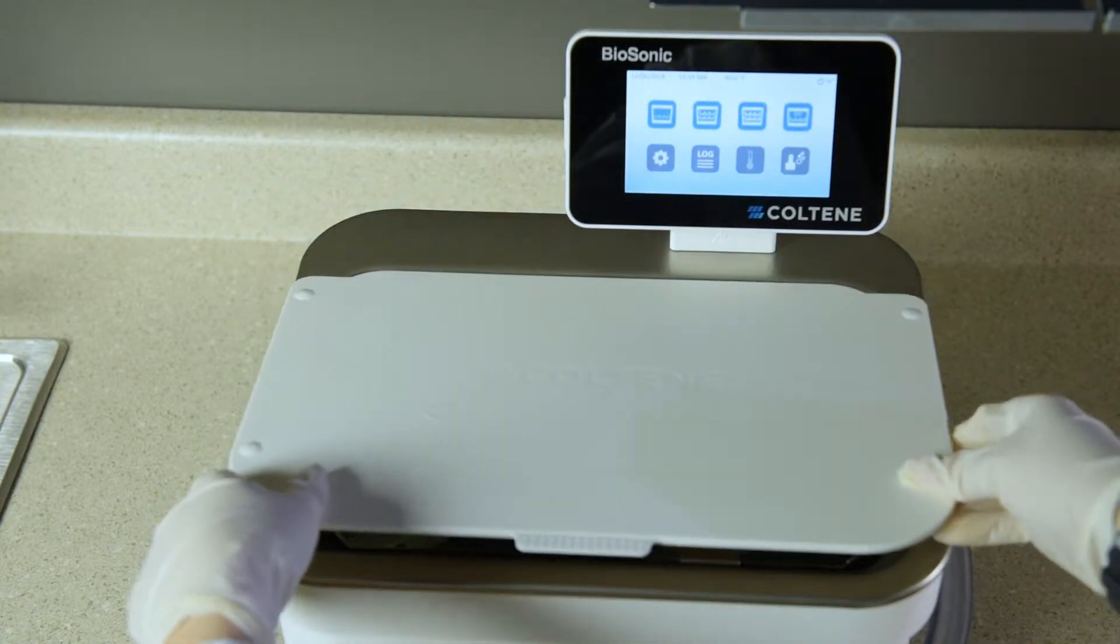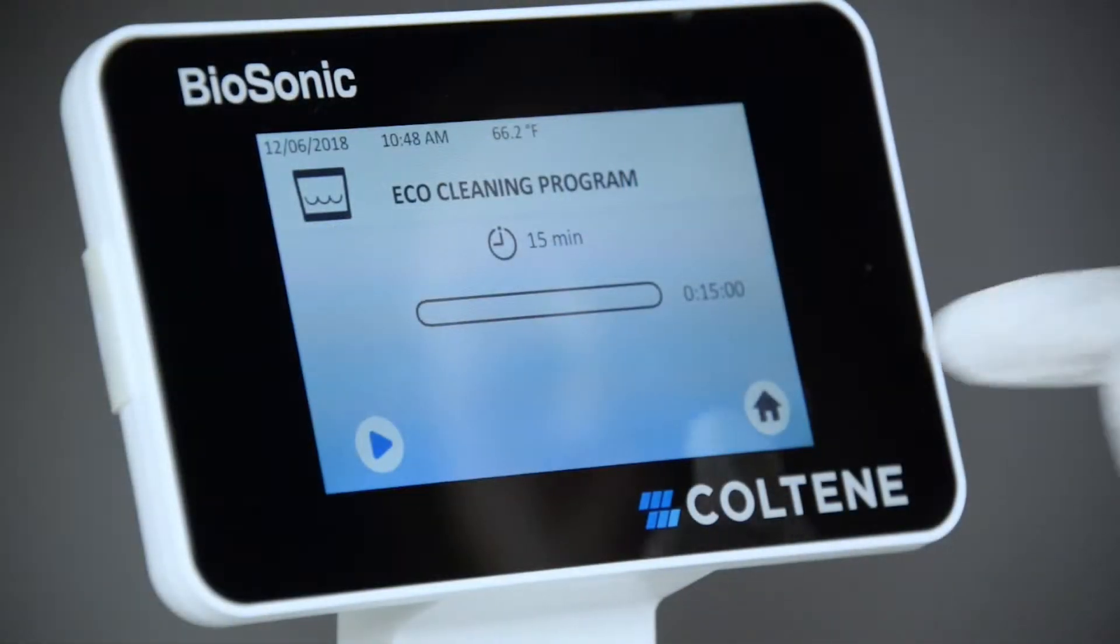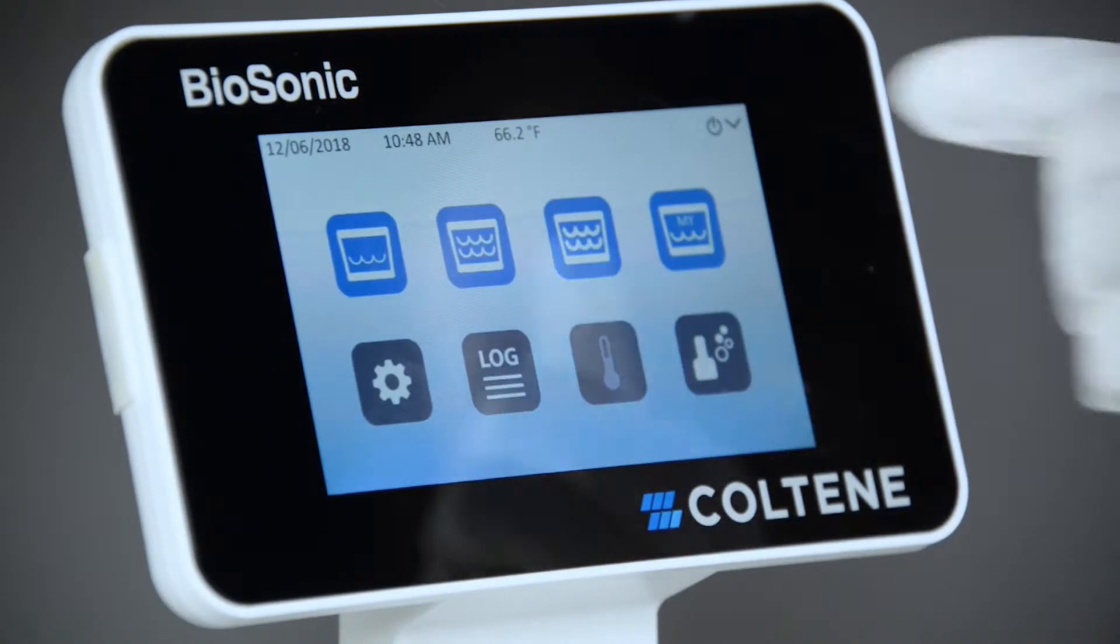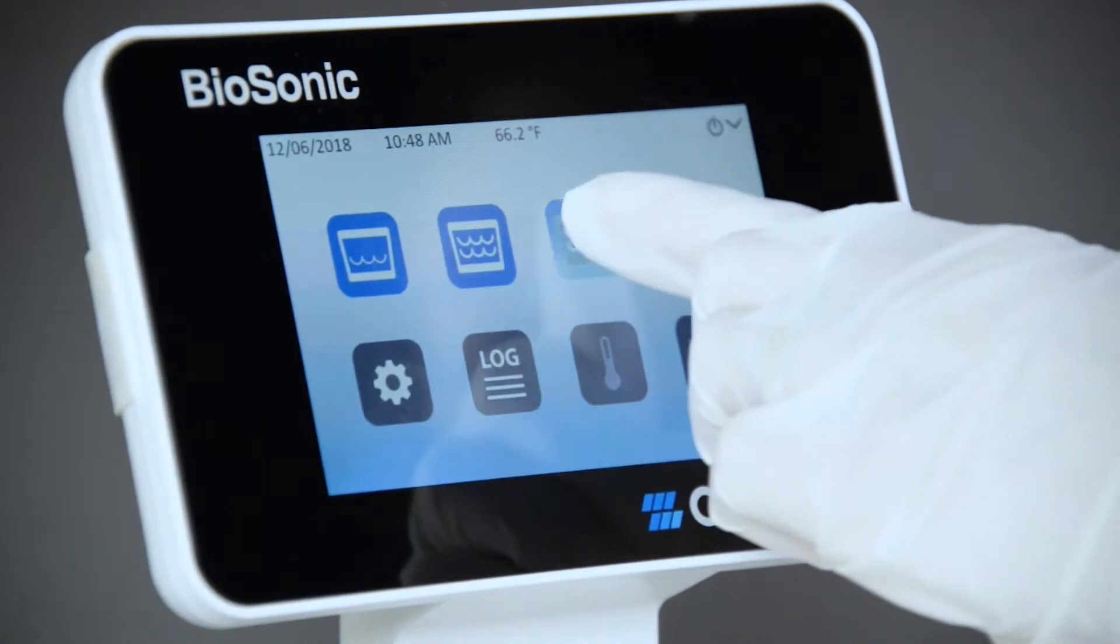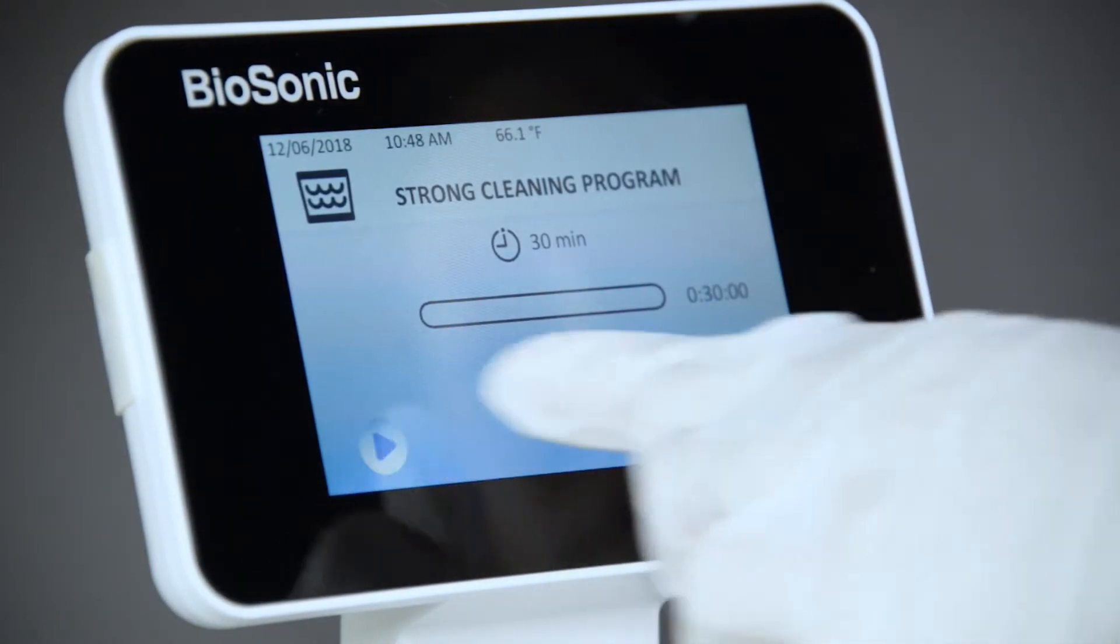If soil is still visible after the completion of a cleaning cycle, modification to one or more parameters may be required. And then additional cleaning cycles may be required until all soil is, at a minimum, visibly removed.